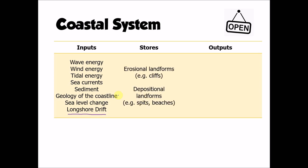The main stores within this system are our landforms. These could be erosional landforms such as cliffs, caves, arches, and stacks, or depositional landforms such as spits, beaches, and sand dunes. All of those typical landforms that we find at the coast are considered to be our stores.